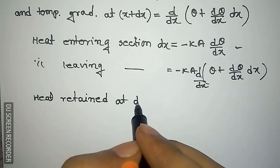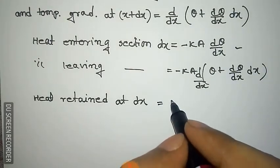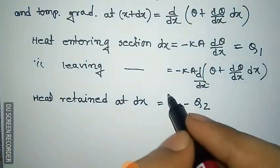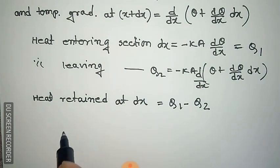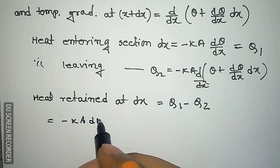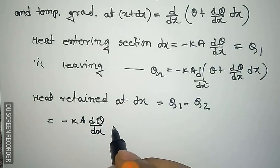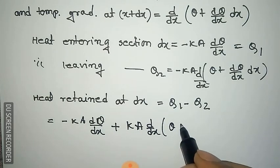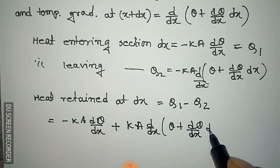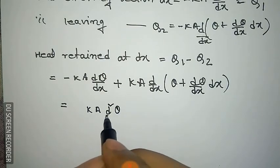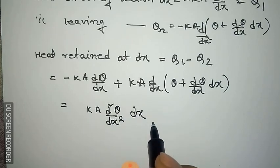The heat retained in section dx would be the subtraction of these two values: Q2 minus Q1, where Q1 is the first quantity and Q2 is the second. Putting in the values and after calculation, it is found to equal k (d² theta / dx²) into dx.